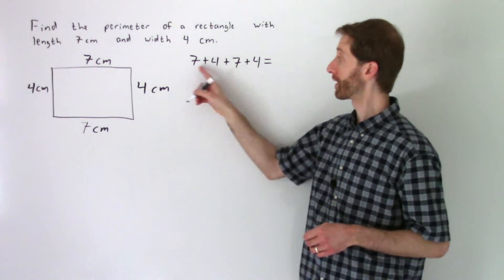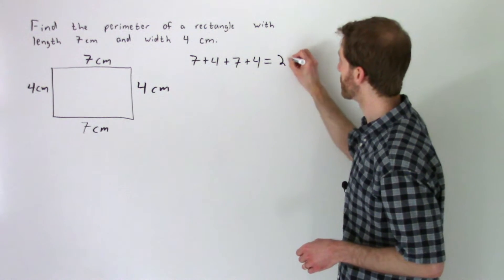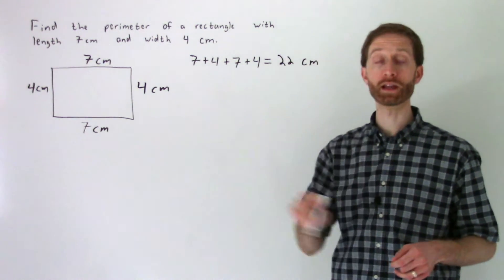And when we add all of that up, we get 11, and 7 is 18, and 4 is 22. And the units would be centimeters because it's a length around.